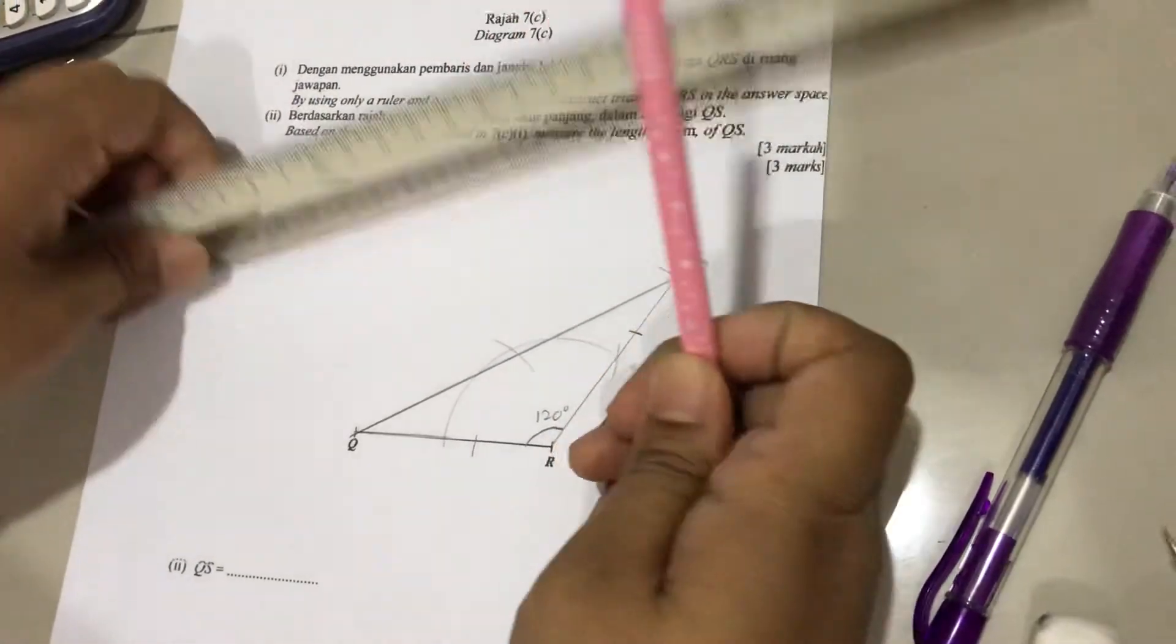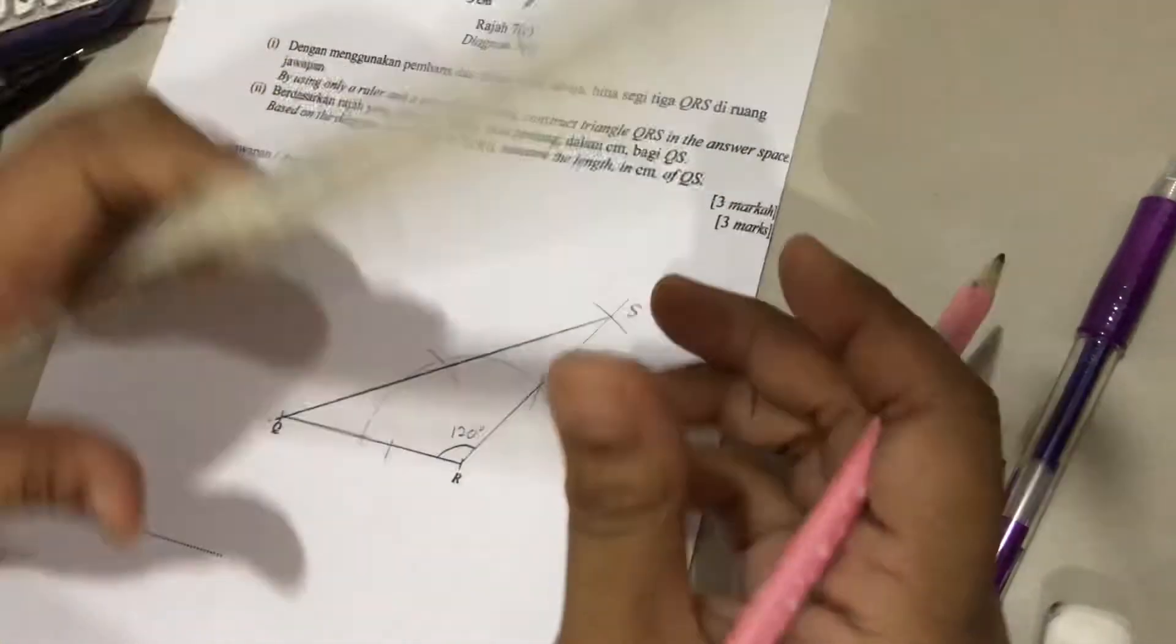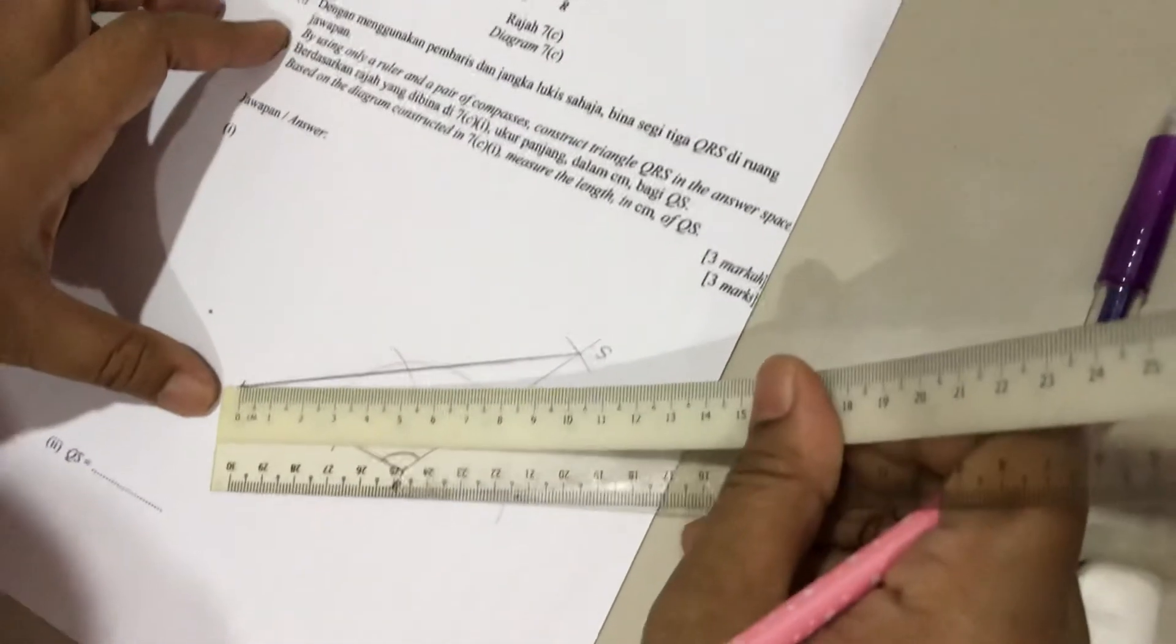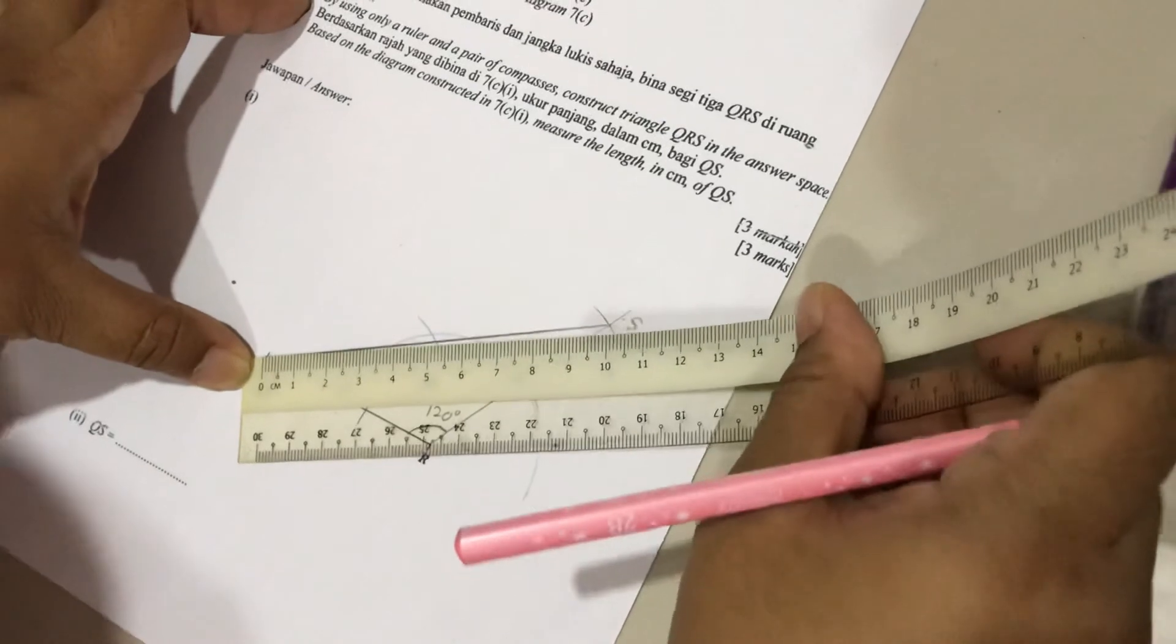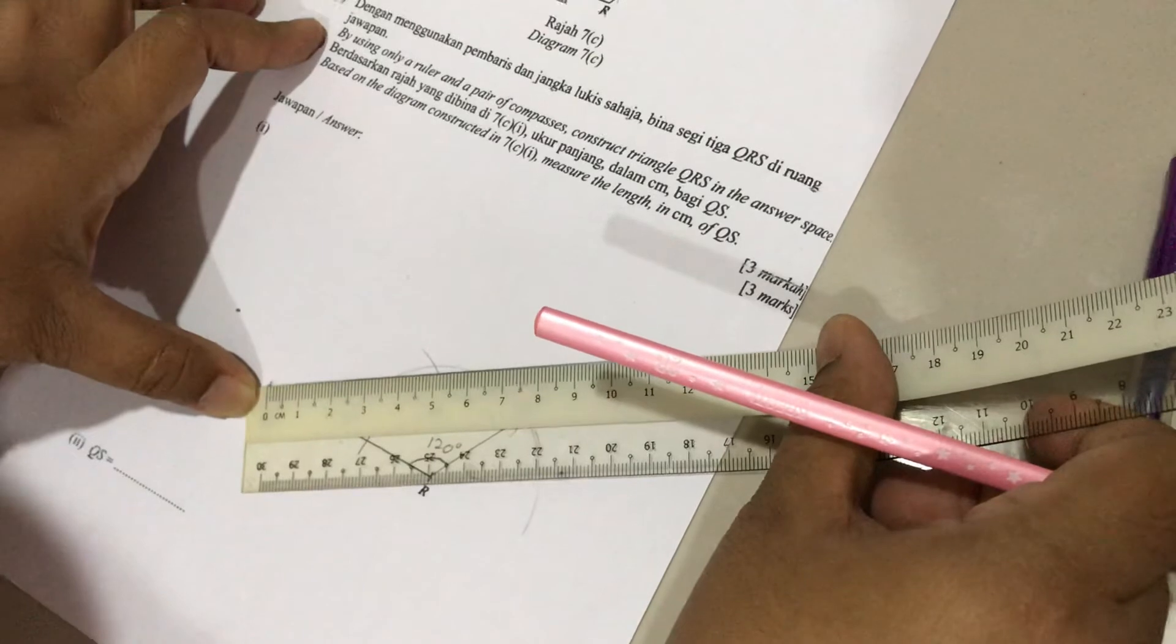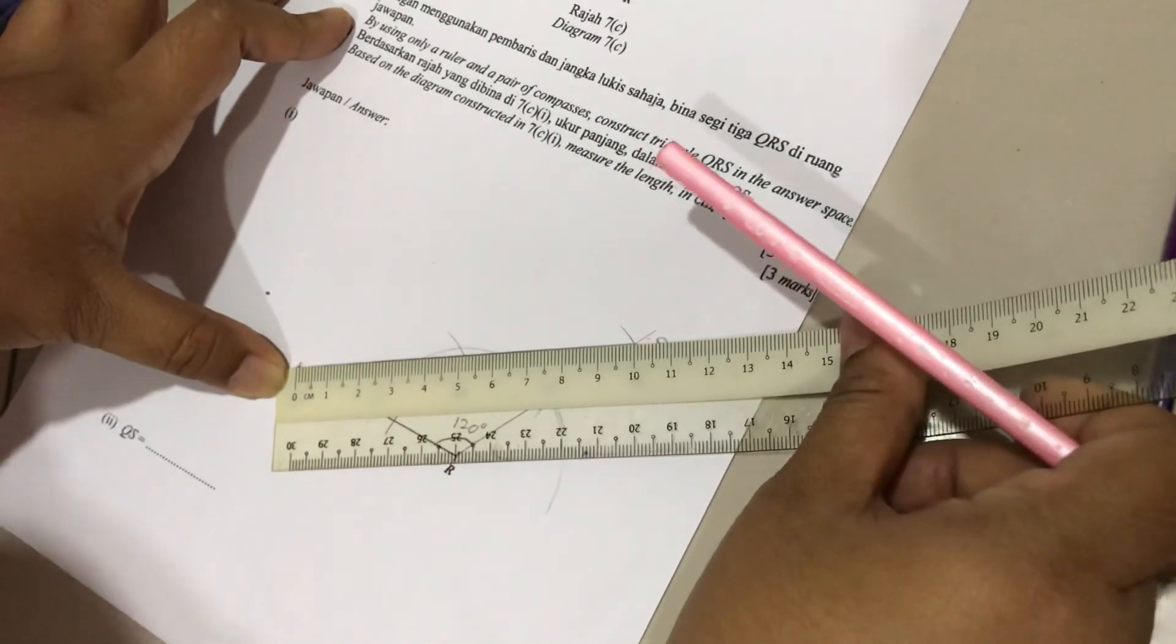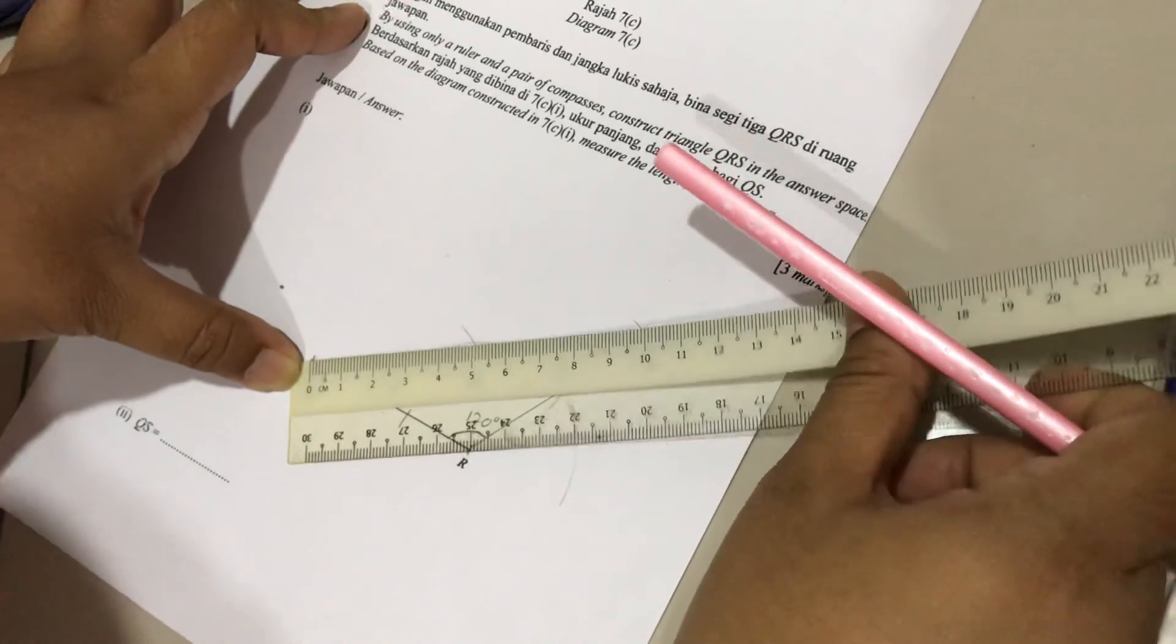The question asks you, based on the diagram, to measure the length of QS. So you have to measure. You will get the answer, which is 9.9 cm, or approximately 10.